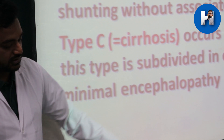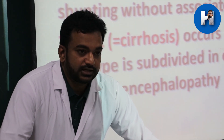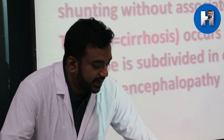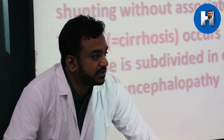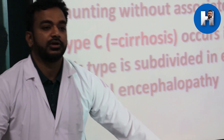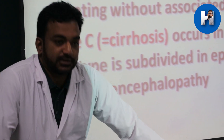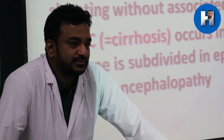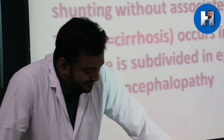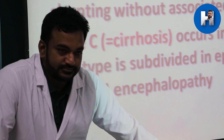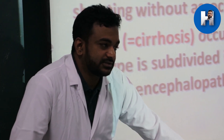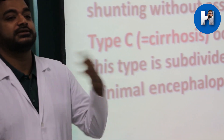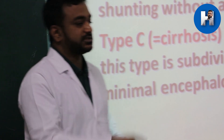By the World Congress of Gastroenterology in Vienna in 1998, hepatic encephalopathy was divided into three types. Type A is acute, associated with acute liver failure as in fulminant hepatitis. Type B is bypass, where there is no intrinsic liver disease but portosystemic shunting occurs surgically. Type C is cirrhosis, or combined.